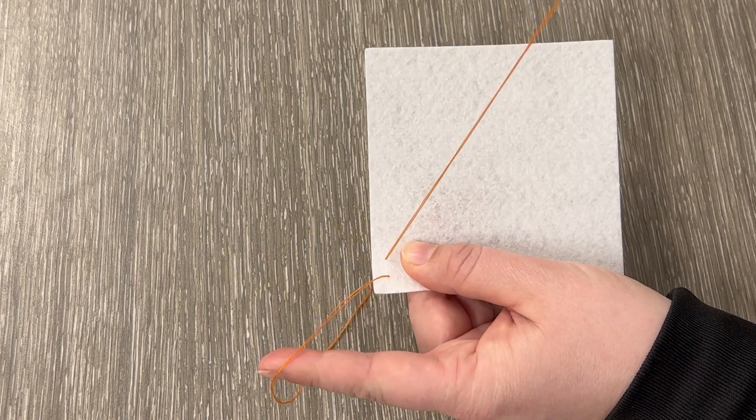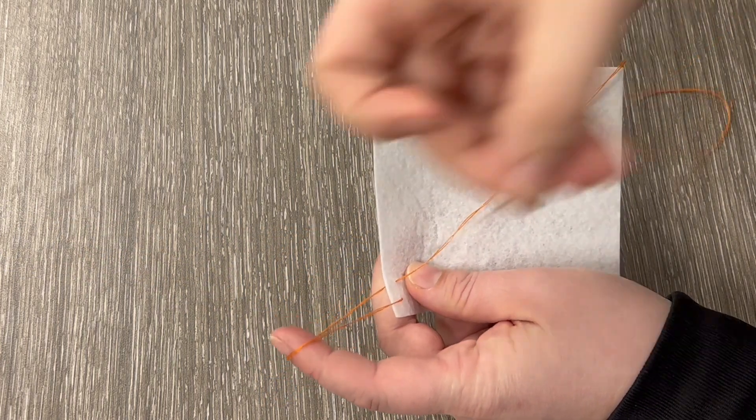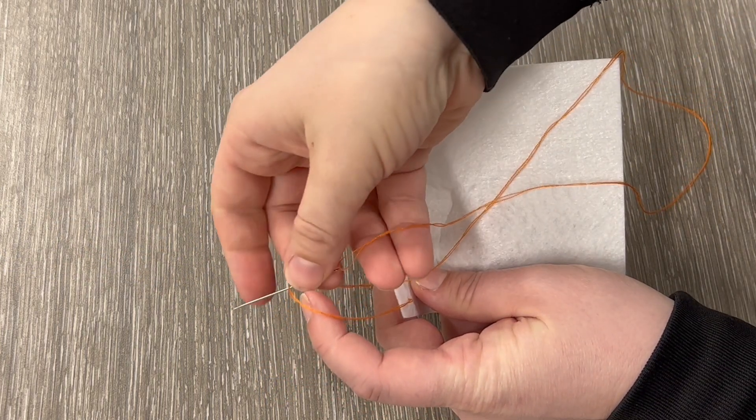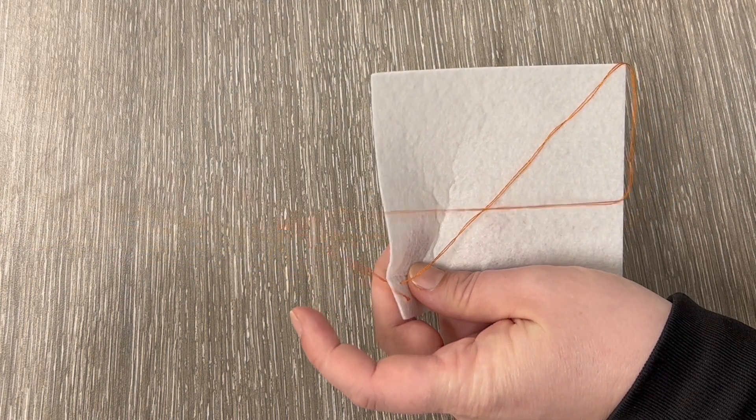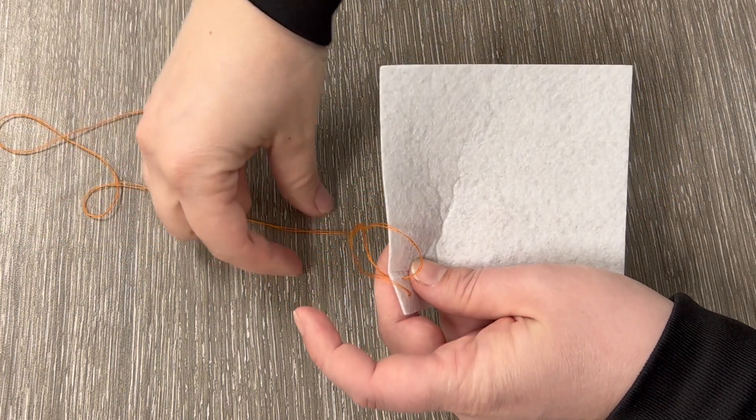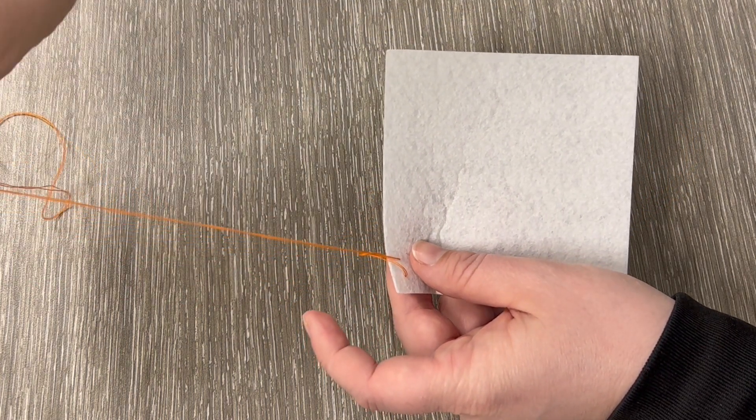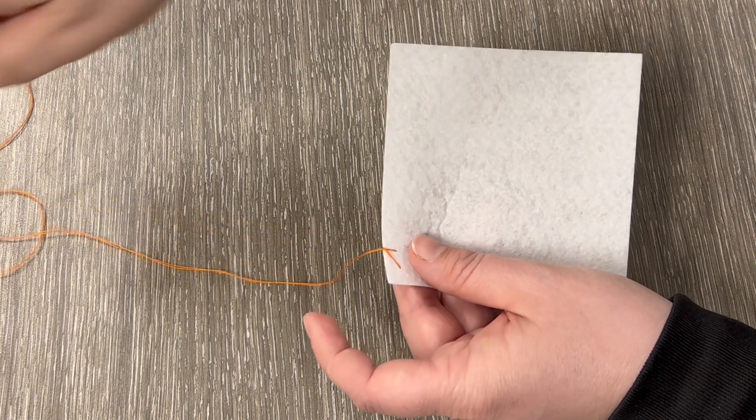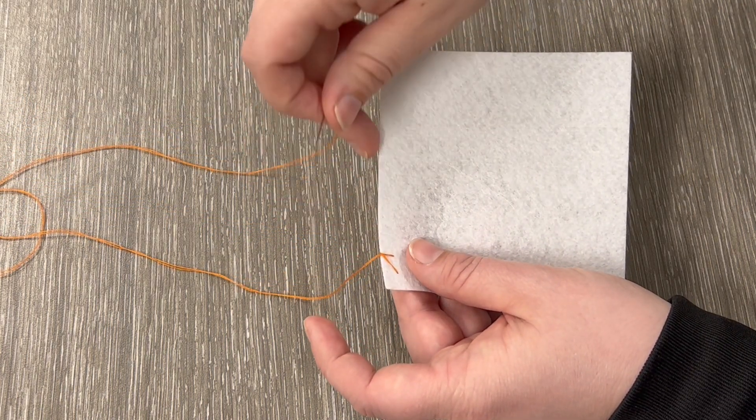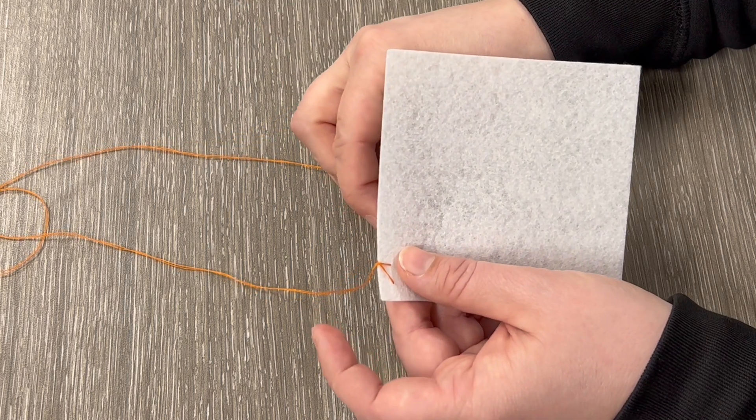And then I'm going to use my pointer finger to catch that loop, and I'm going to take my needle and go from front to back through the loop. This first one, it's not going to give me a nice edge, it's just going to give me a crooked edge. But essentially we're wanting an edge all along here.